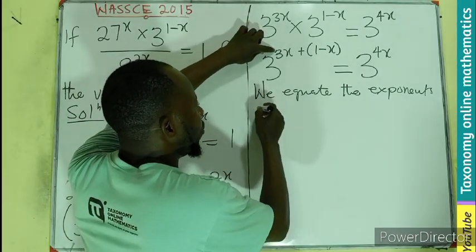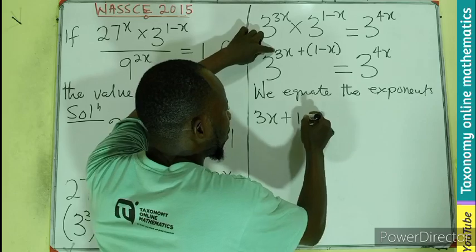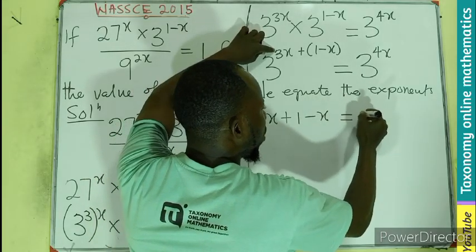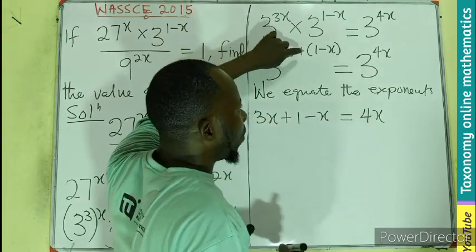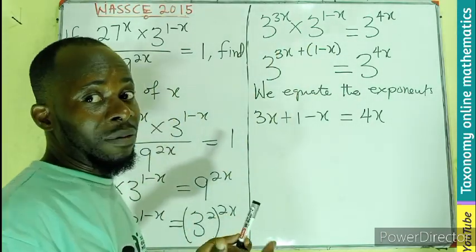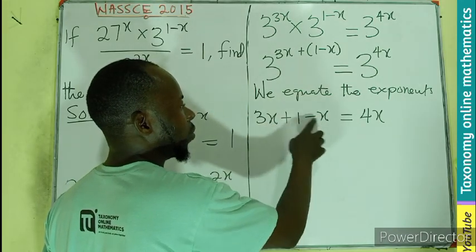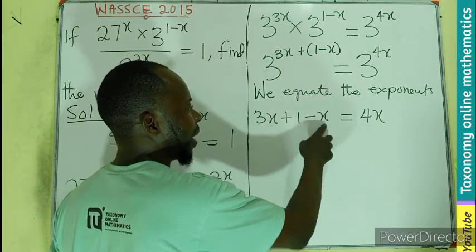So that means we equate the exponents, meaning we will be having 3x + 1 - x should be equal to 4x. I only take away the bracket, seeing there is no other number in front apart from 1.